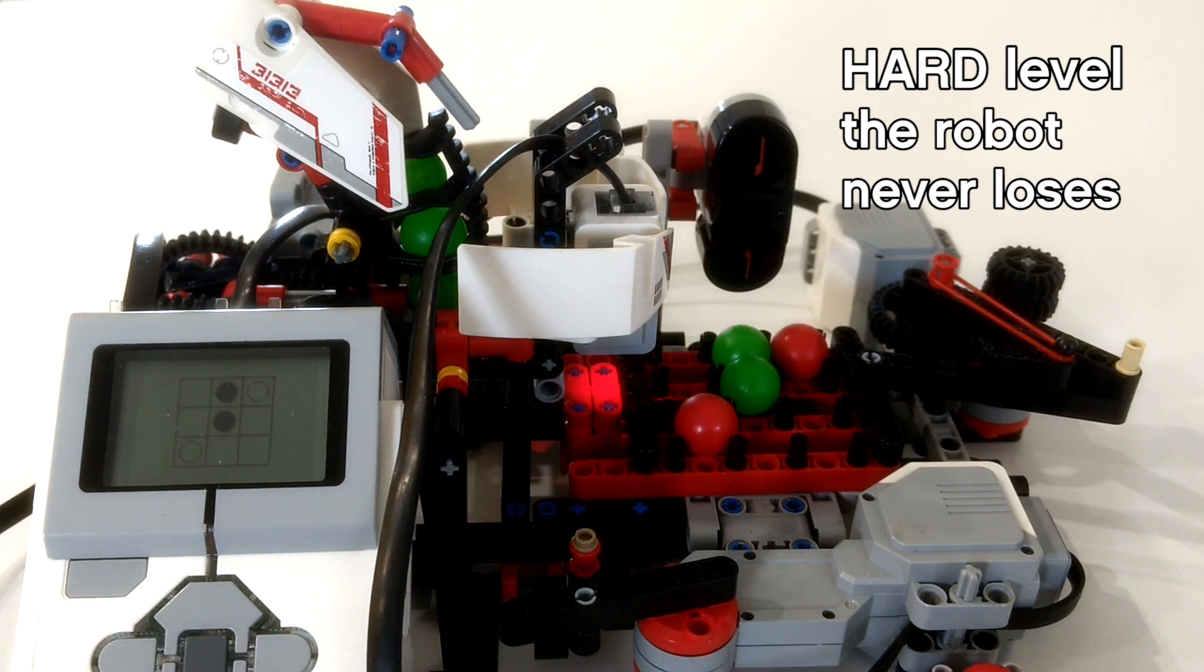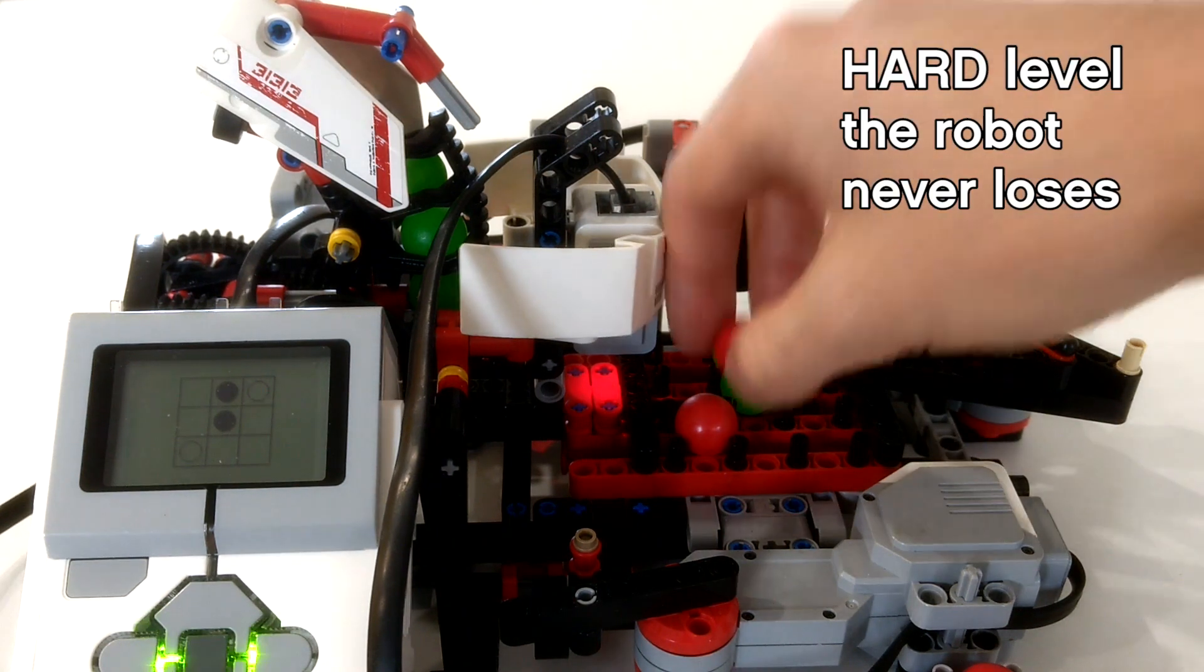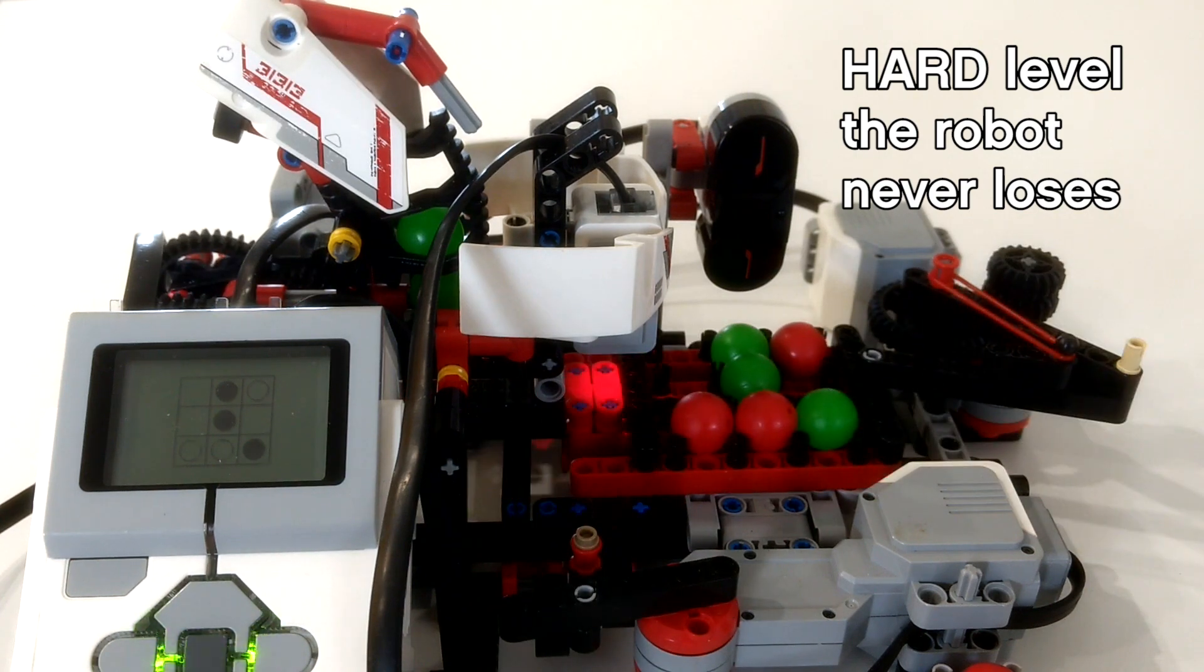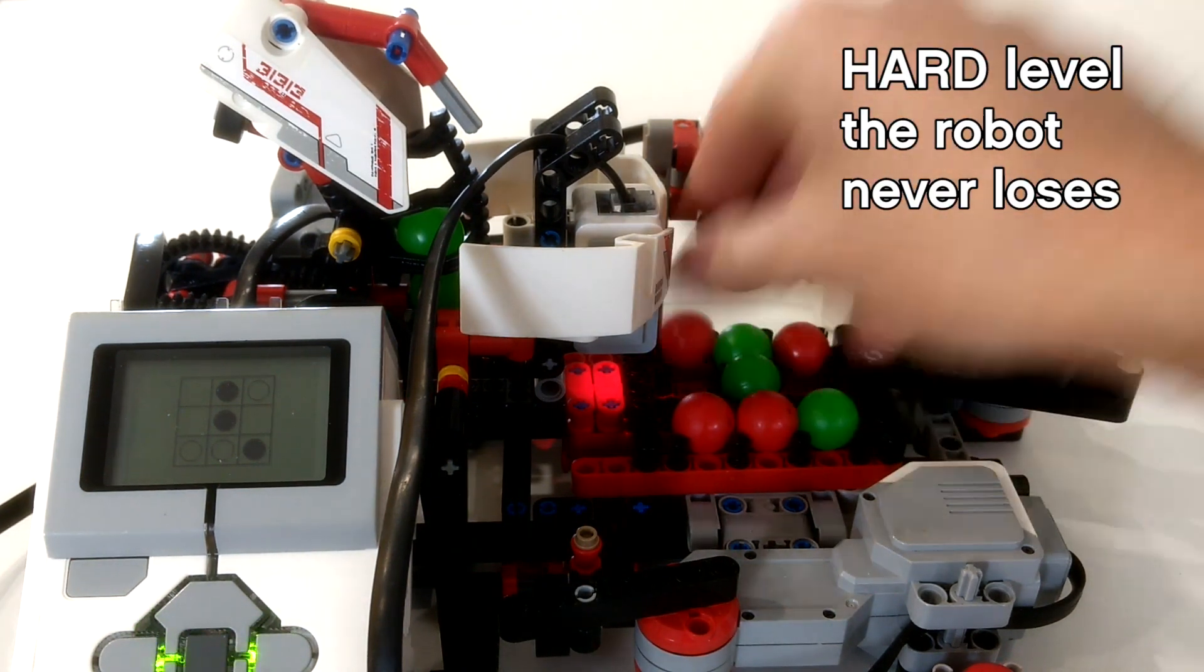And the robot makes two in a row. So now I am forced to block it. At this point I have to block it again.